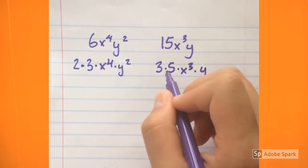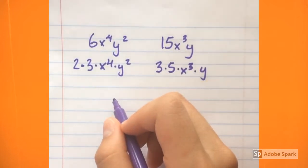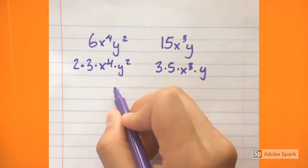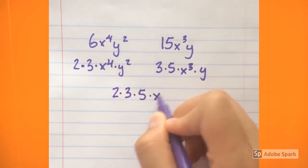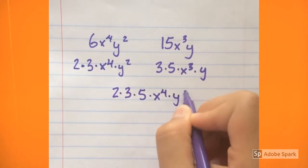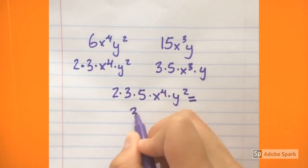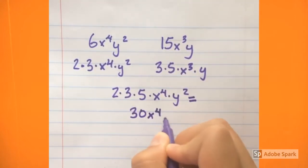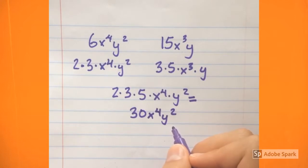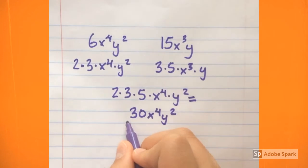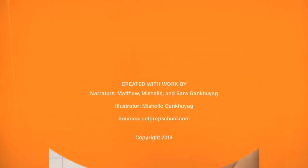Now we take out the factors that have the highest exponents from each expression and then multiply them together to get the answer. This means that we multiply 2 times 3 times 5 times x to the 4th power, times y to the 2nd power, and that equals 30x to the 4th power, y to the 2nd power. So the least common multiple of 6x to the 4th power, y to the 2nd power, and 15x to the 3rd power, y equals 30x to the 4th power, y to the 2nd power.